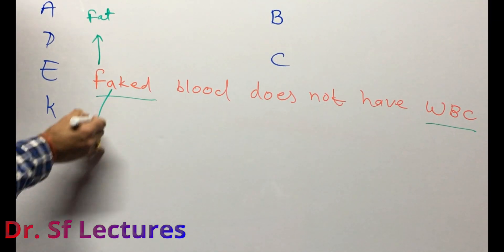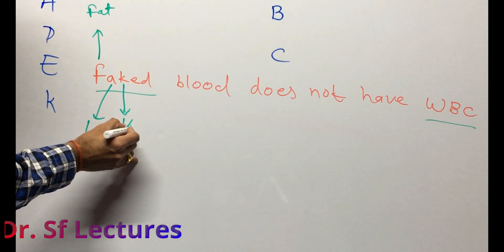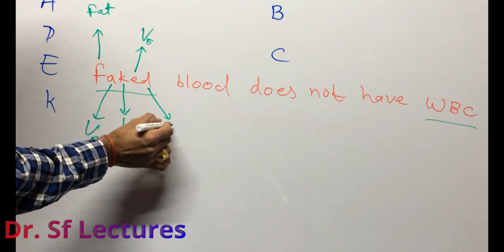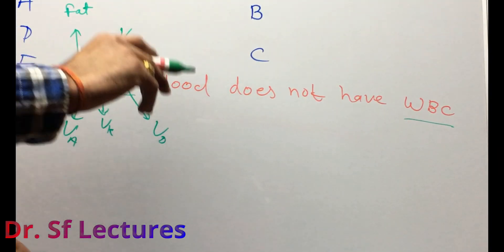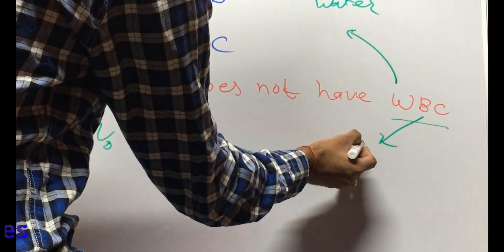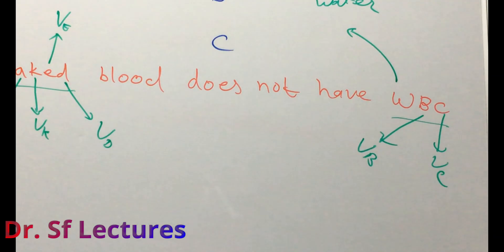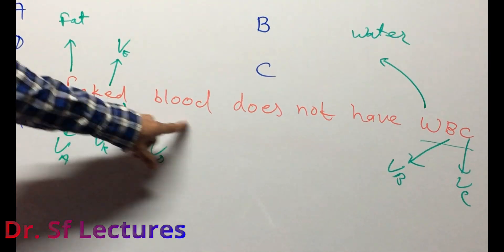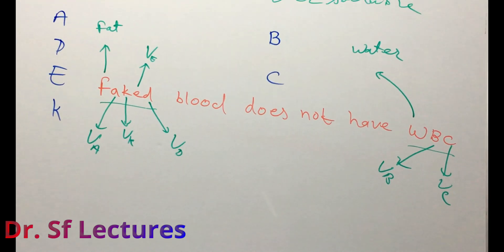In the mnemonic: F stands for Fat, A for vitamin A, K for vitamin K, E for vitamin E, D for vitamin D. Then W stands for Water, B for vitamin B, and C for vitamin C. This is how to remember which vitamins are fat-soluble and which are water-soluble.